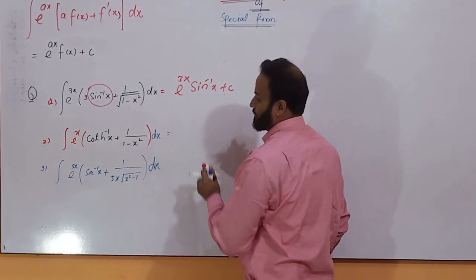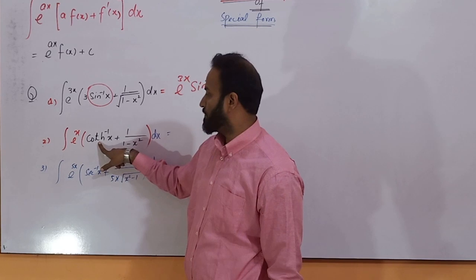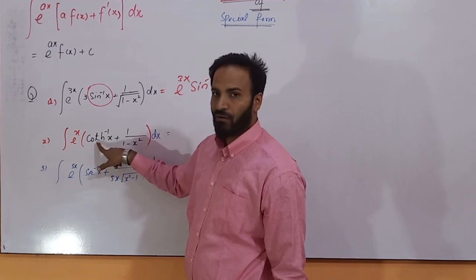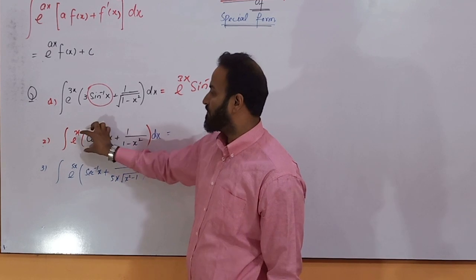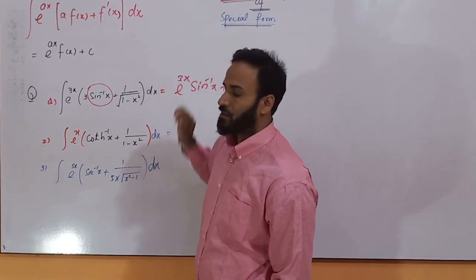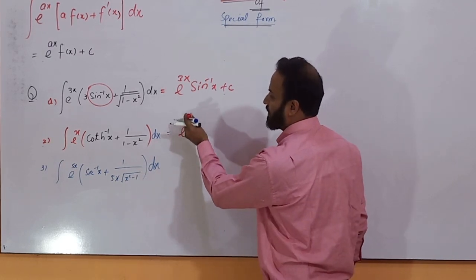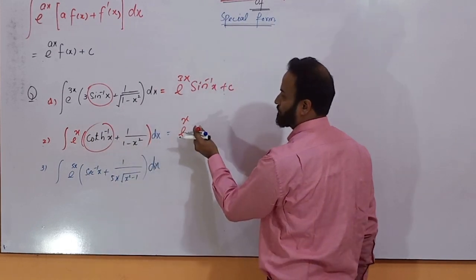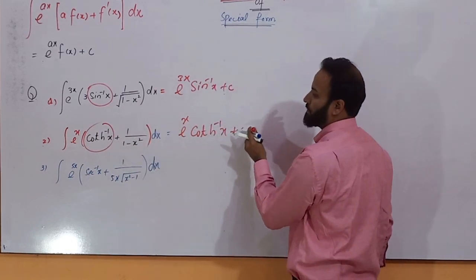Another form you can see here: exponential form, the function, and the derivative of this function is added. So the final answer of this expression according to this formula or technique, you can write here e^x and the function cot hyperbolic x plus c.